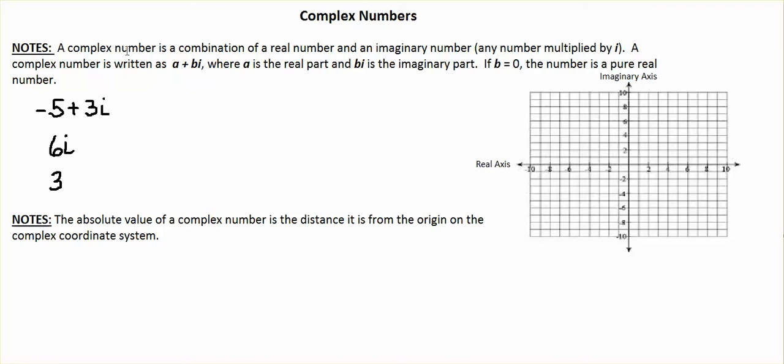A complex number is written as a plus bi, and that's its standard form, where a is the real part and bi is the imaginary part. If b is zero, this term goes away and we have a pure real number.